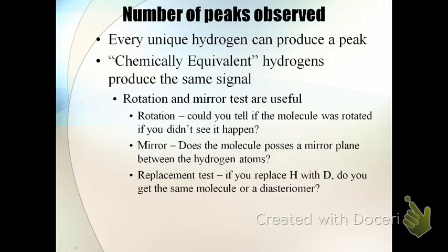For example, if you have two methyl groups that are chemically equivalent, each methyl group produces one signal. But these signals add up, so instead of seeing a signal for three hydrogens, you end up seeing a signal for six hydrogens.